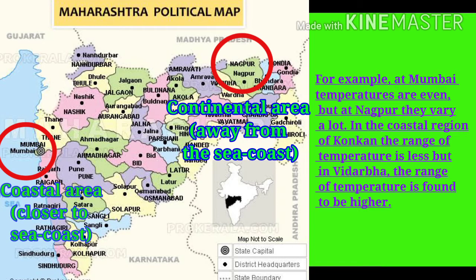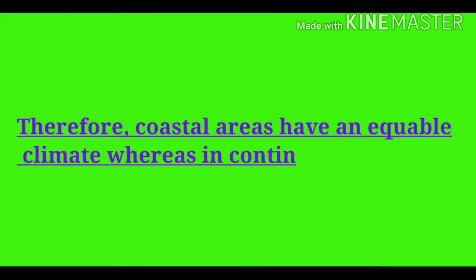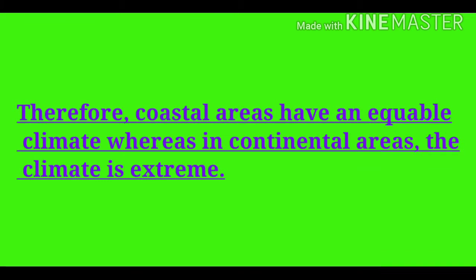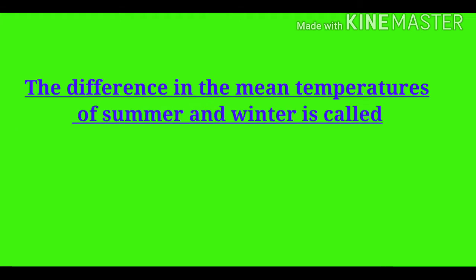For example, Mumbai temperatures are even, but at Nagpur they vary a lot. In the coastal region of Konkan, the range of temperature is less, but in Vidarbha the range of temperature is found to be higher. Therefore, coastal areas have an equable climate, whereas in continental areas the climate is extreme. For example, the climate of Mumbai is equable, whereas in continental locations like Nagpur it is extreme.